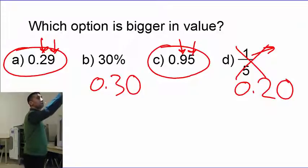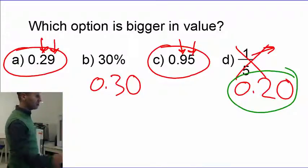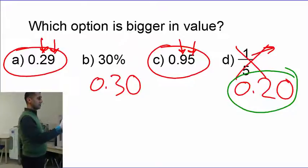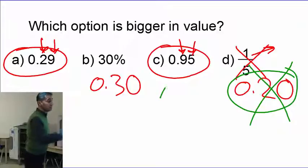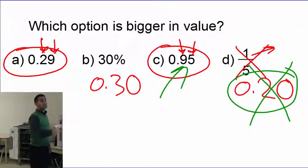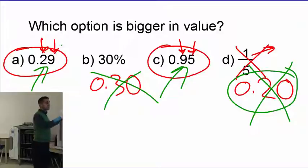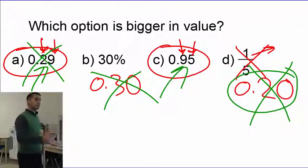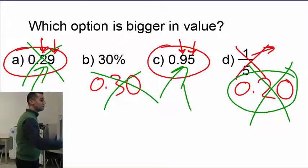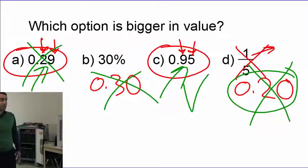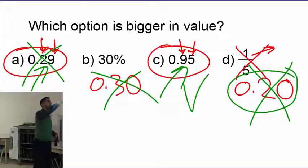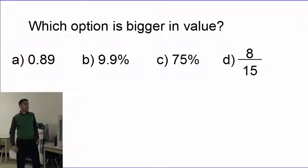0.20 seems big at first — I want to choose that. Next is 0.95 — no, that's more, that became bigger. How about 0.30? Still 0.95 is bigger. How about 0.29? Still 0.95 is bigger. So in value, the bigger number is 0.95 — option C is the correct one.